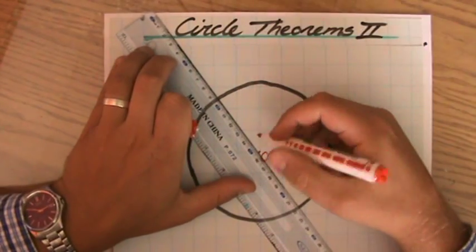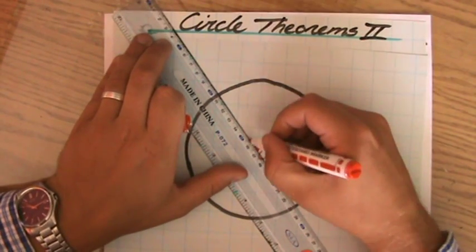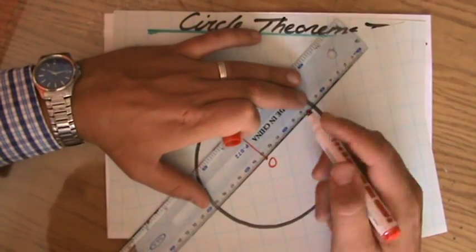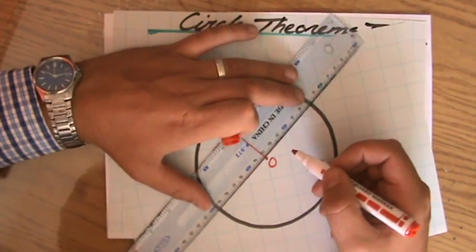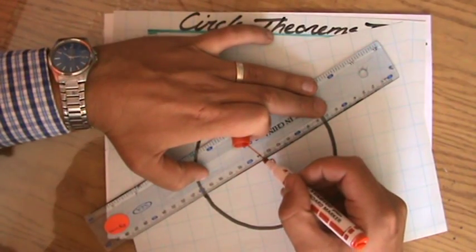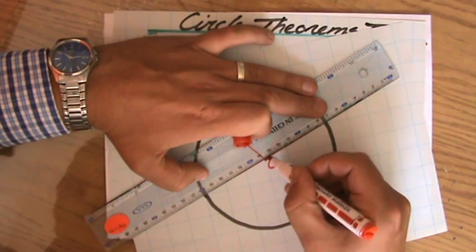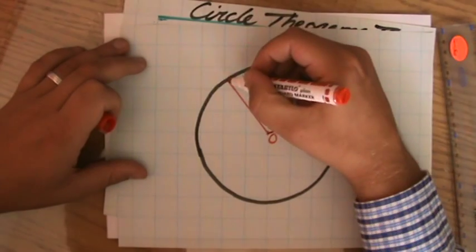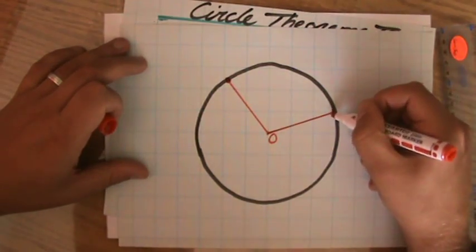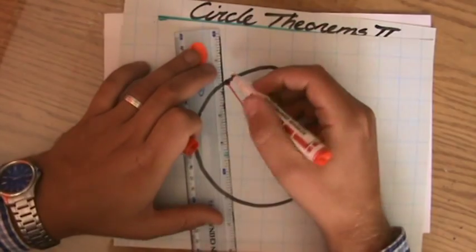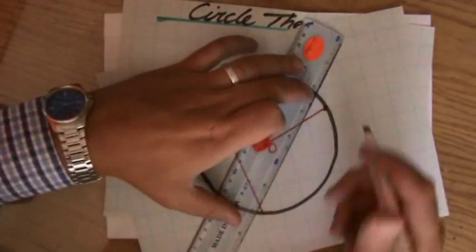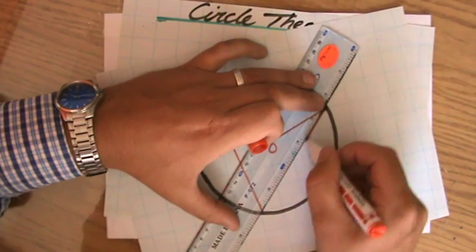If I have a radius, so I'm talking about the center of a circle to the circumference, and I have another radius, let's say in that direction. It doesn't matter in which direction you go. But let's say over there. So those are two radii from the center of the circle. And then from this point and that point, I draw two lines and they meet somewhere else on the circumference, for instance here.